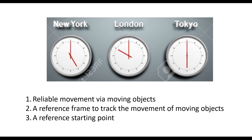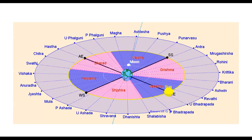The third thing we also need is a reference starting point. In the case of a wall clock it simply refers to a specific location for which the time of the day is measured, such as New York, London, or Tokyo. Now let's look at the celestial clock — in the celestial clock the smallest unit is the unit of a day.